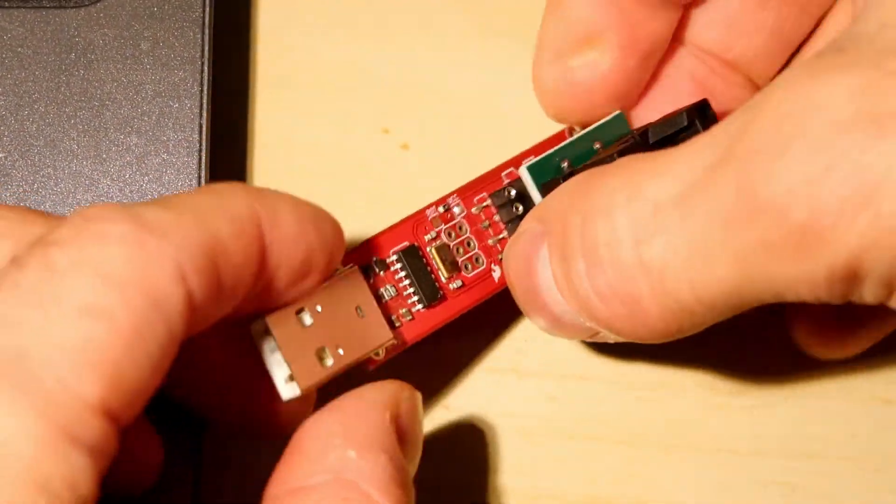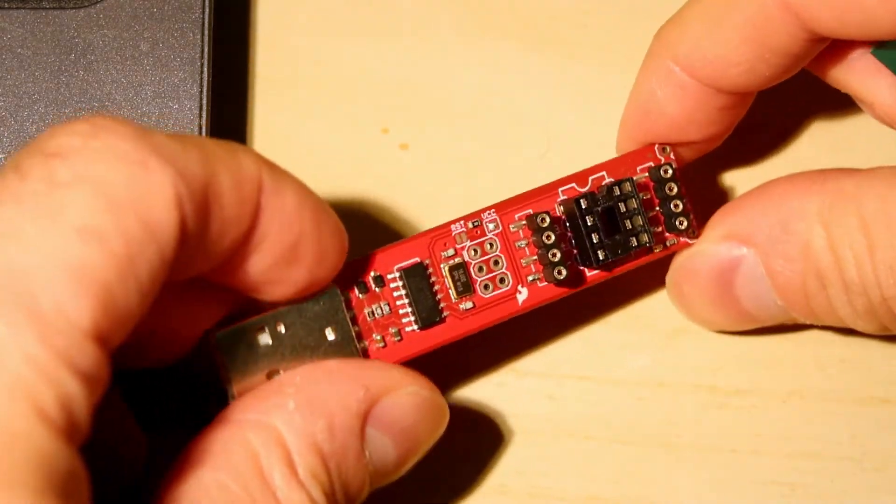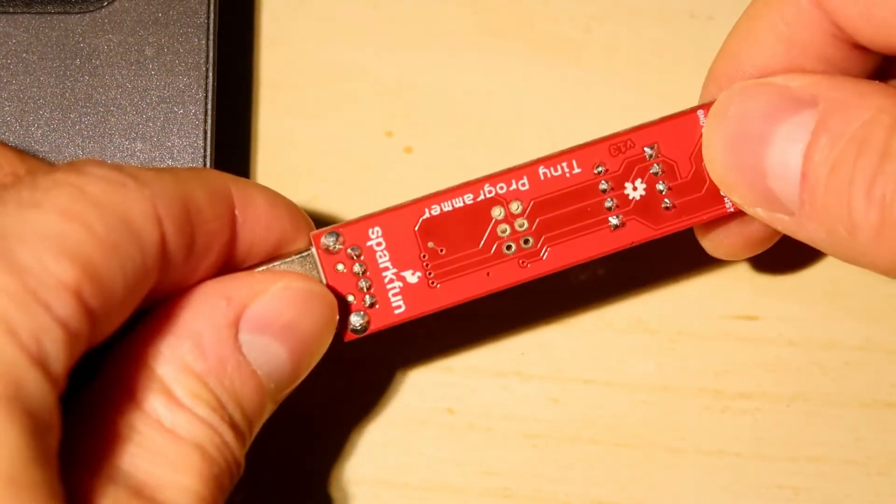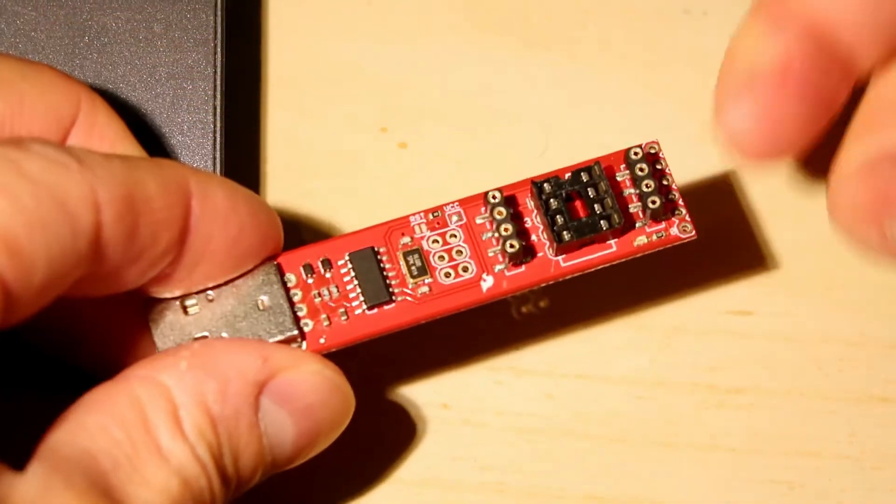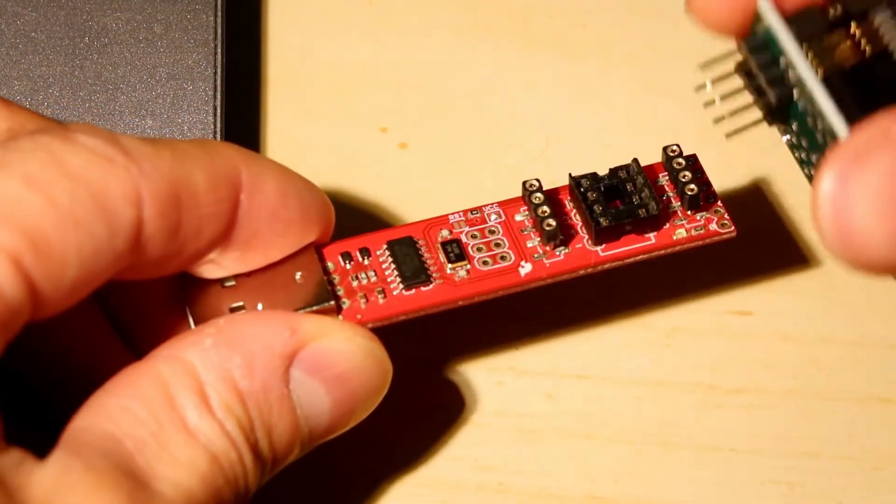The programming system consists of two parts. I have the programmer here from SparkFun, the Tiny Programmer. It's just a USB device with an 8-pin DIP socket.